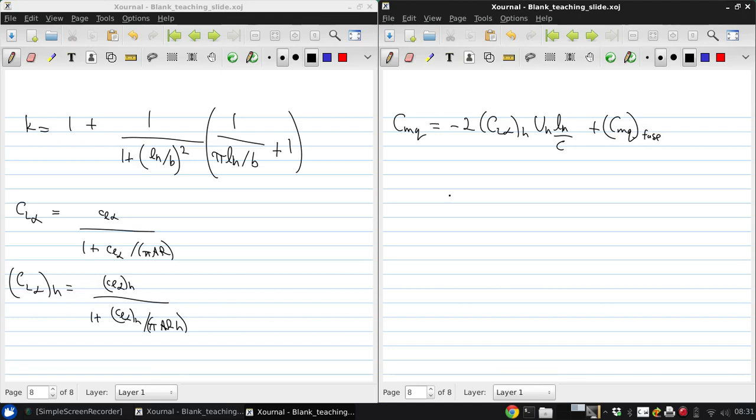All of these quantities were previously defined except for Cmq-fuse, and this, there's no easy analytical formula for. This must be estimated based on the fuselage geometry. One way you might consider this is to think of the projection of the fuselage as essentially a flat plate, and this is something that we will look at in class.